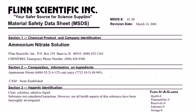What you see in front of you is a material safety data sheet, much like you will see for any of the chemicals we use in the laboratory. This one has been distributed by Flinn Scientific Incorporated, which is the company we use to get most of our chemicals for the chemistry lab.